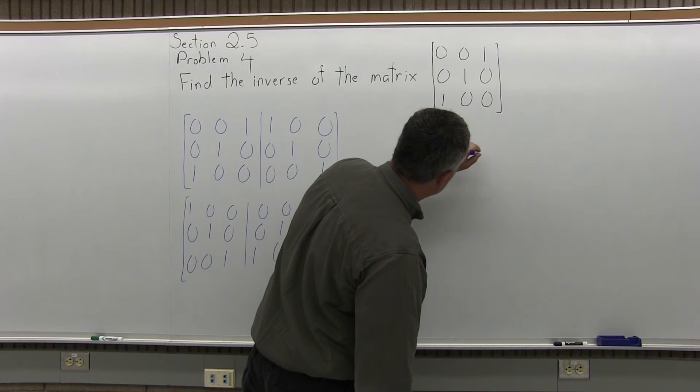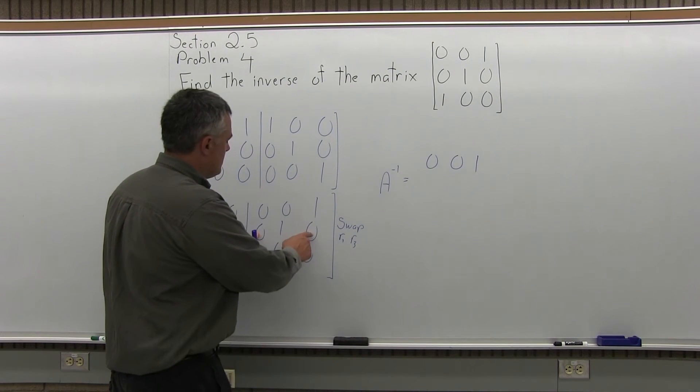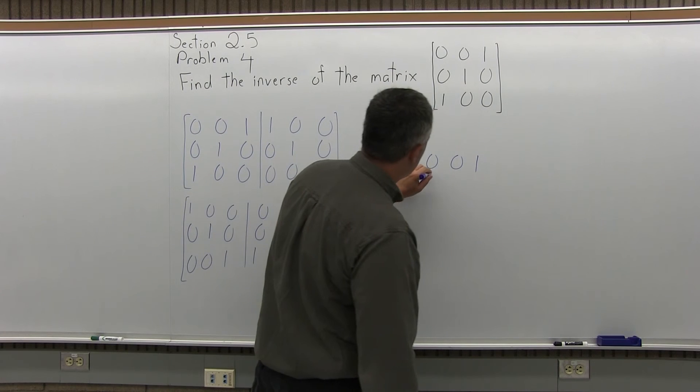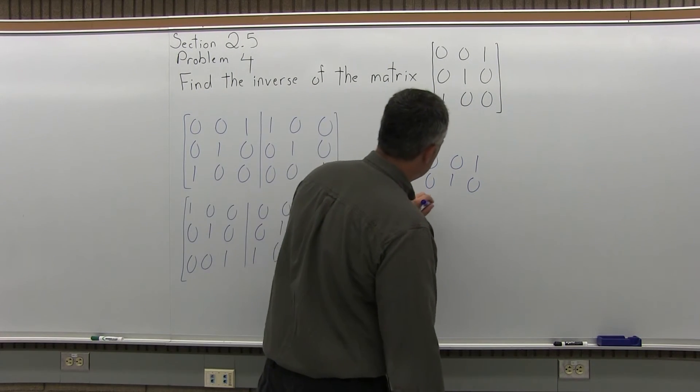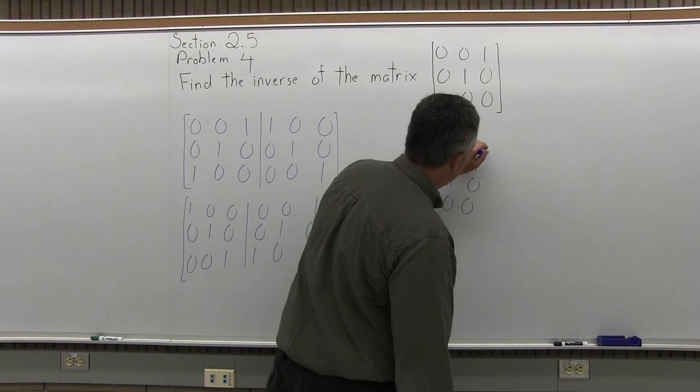Equals the matrix on the right half of our double matrix. So the top row of that is 0, 0, 1. The middle row is 0, 1, 0. And the bottom row is 1, 0, 0. That's the inverse.